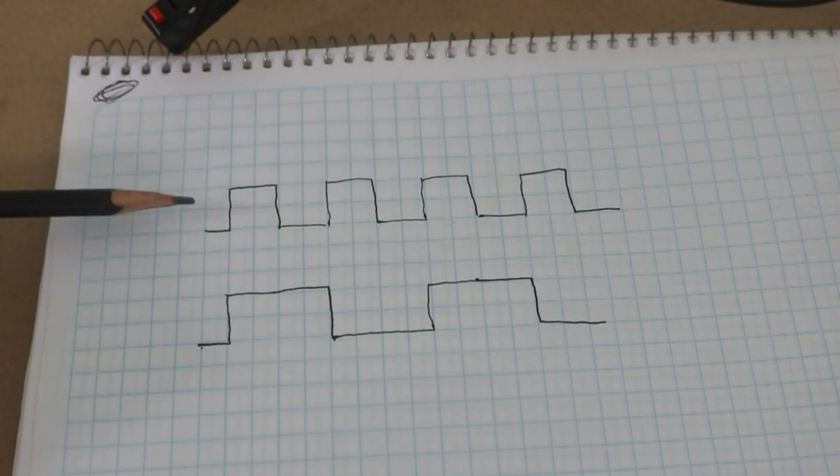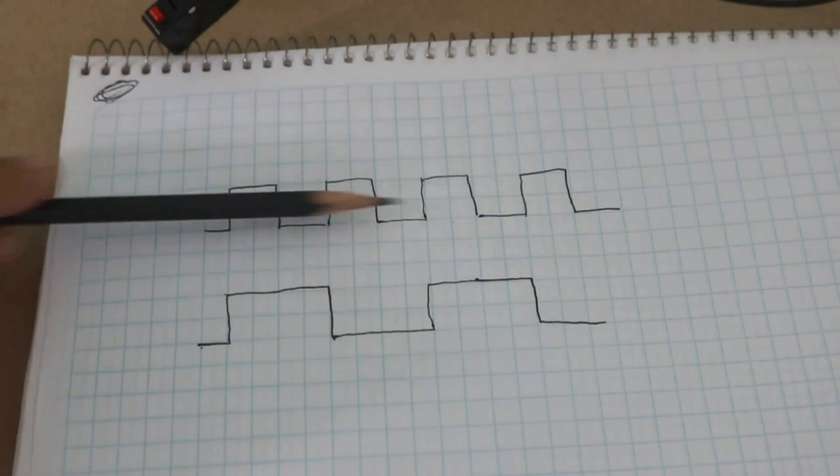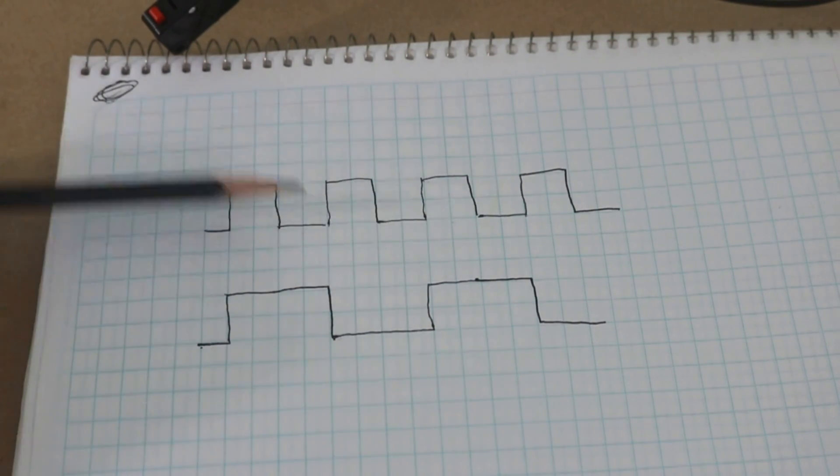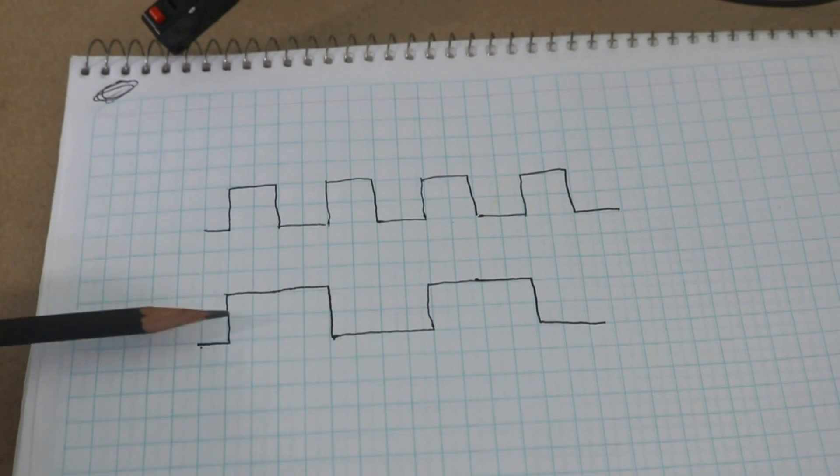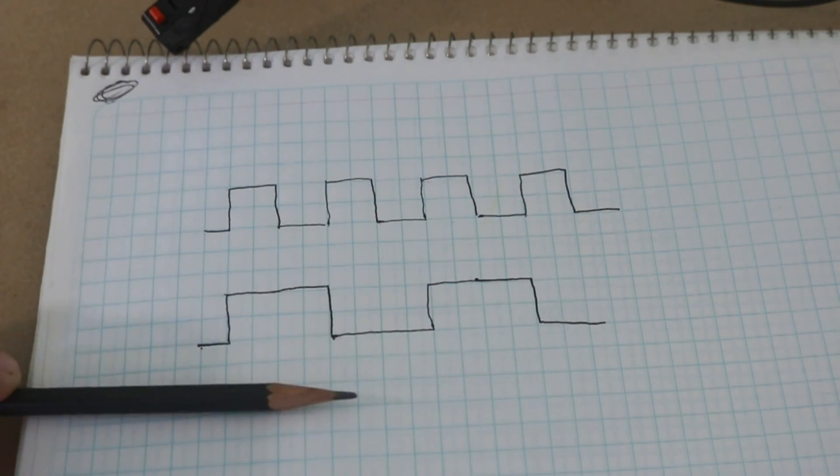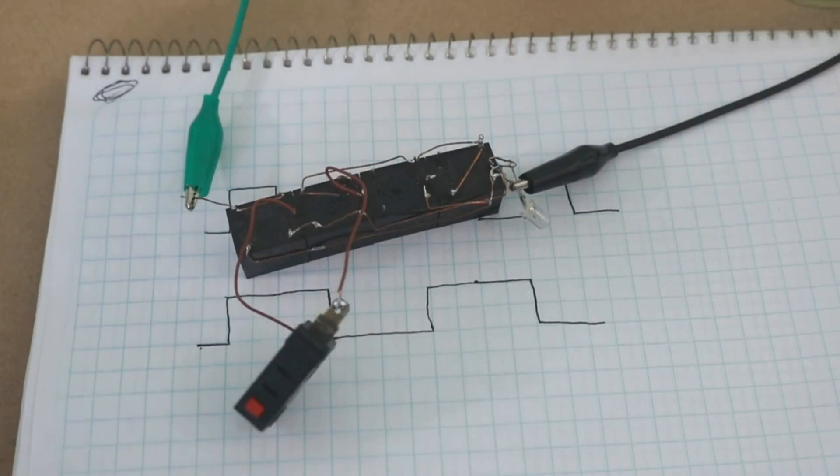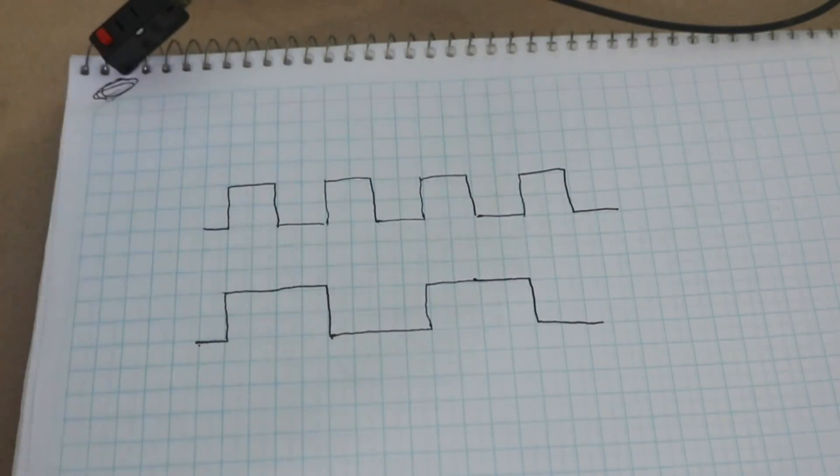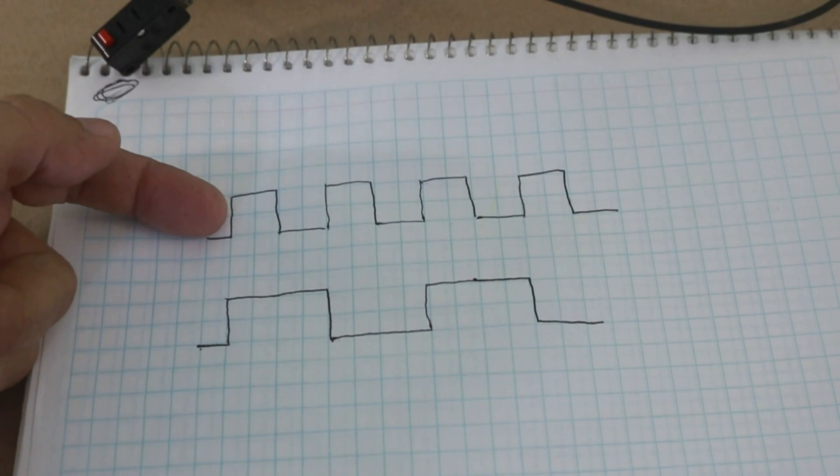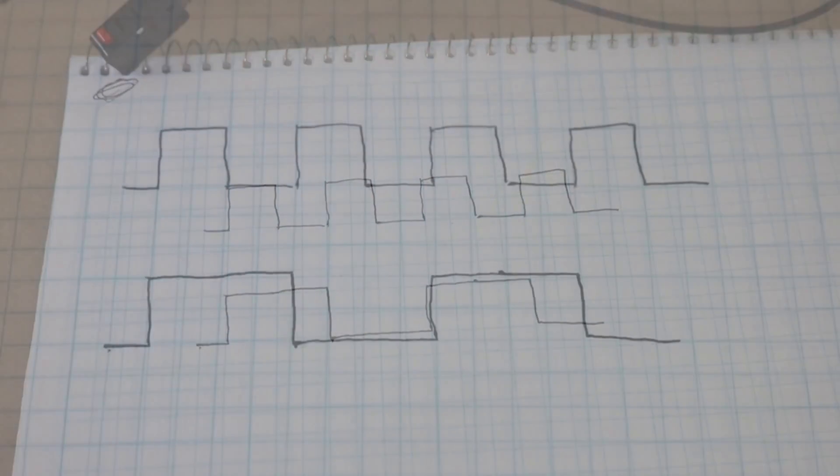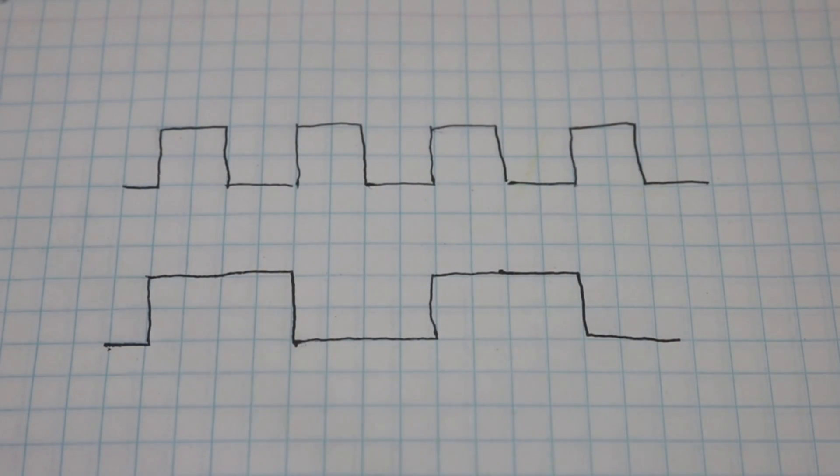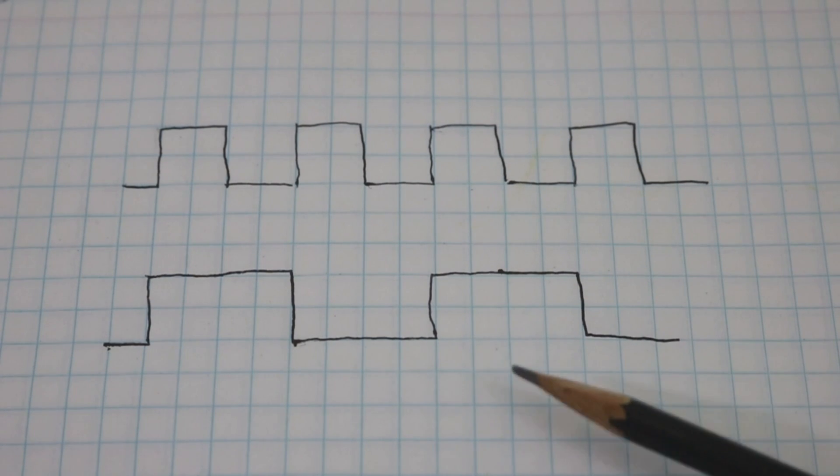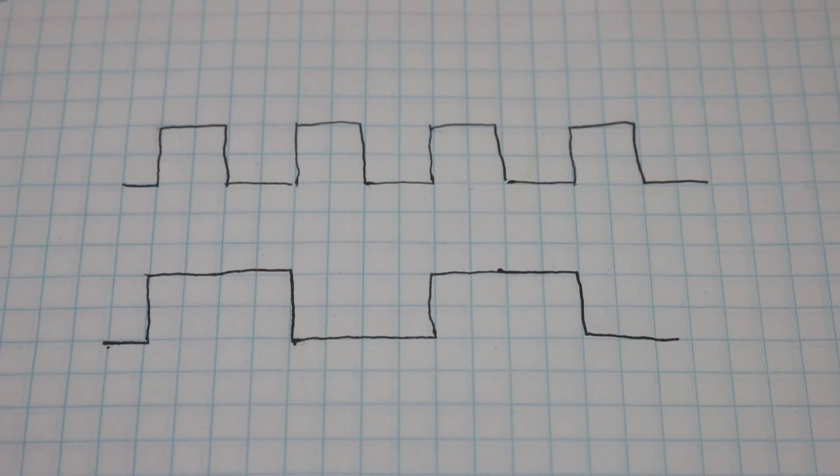You can see that the input frequency represented here for the switch is double the frequency of the LED. So our flip-flop is working here as a frequency halver. It divides the input frequency in two.